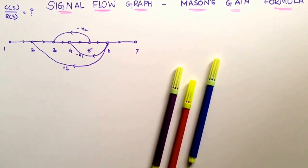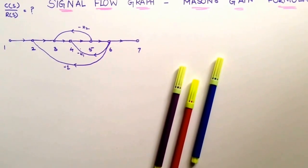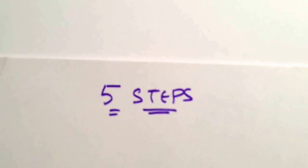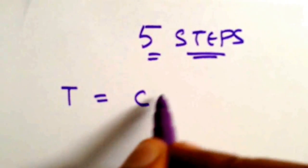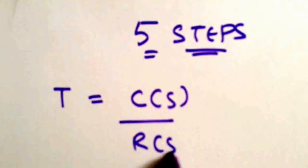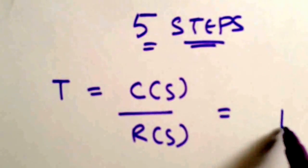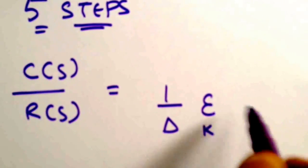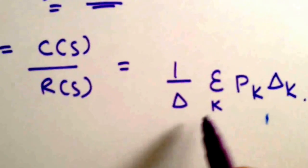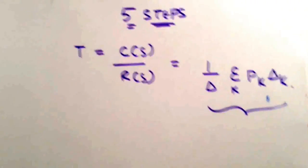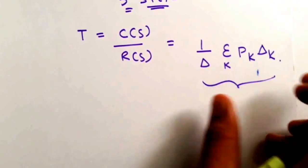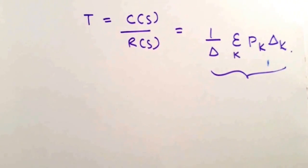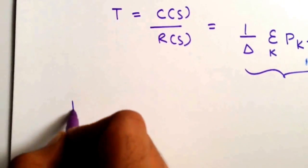Before we start, basically five steps are involved in this reduction. The Mason's gain formula is: T = C(s)/R(s) = (1/Δ) × Σk pk·Δk. The five steps we are going to follow are essentially calculating the individual terms of this expression, and we will go through them one by one.